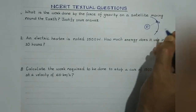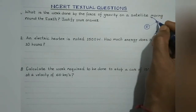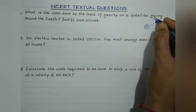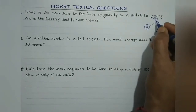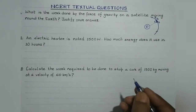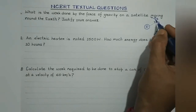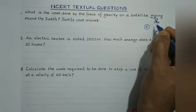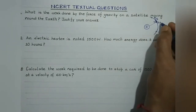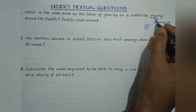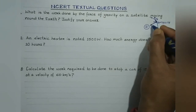Suppose the satellite is moving along this direction. So at any instant, its displacement would be given by drawing a tangent — this is the displacement S, and this is the radius. Now, the tangent is always perpendicular to the radius. The gravitational force which acts between the satellite and the earth is along the radius. So the gravitational force acting on the satellite due to the earth is along the radius — this is the force.